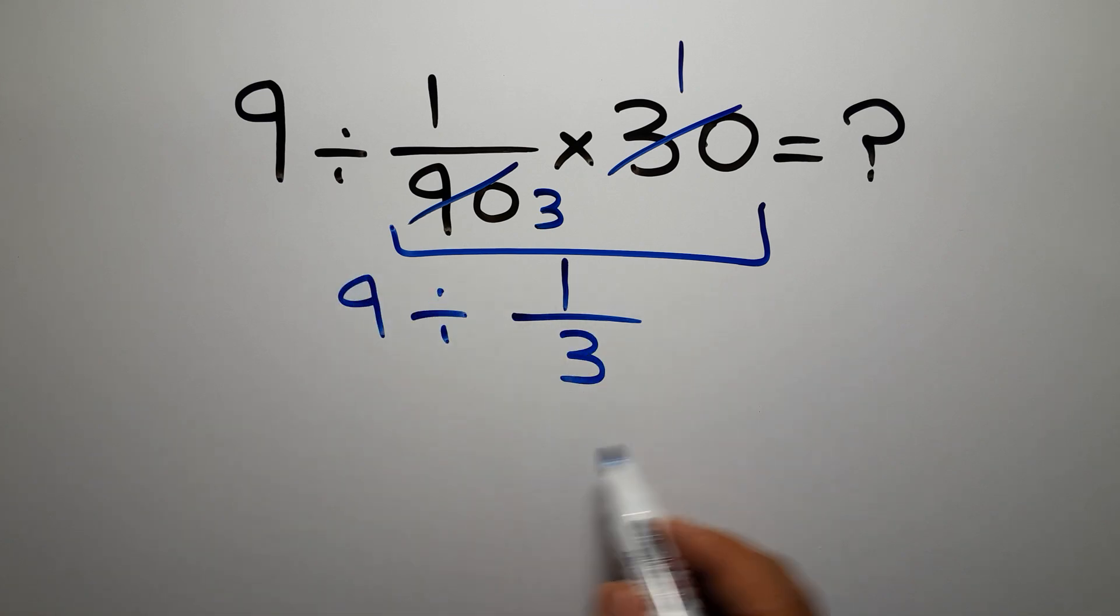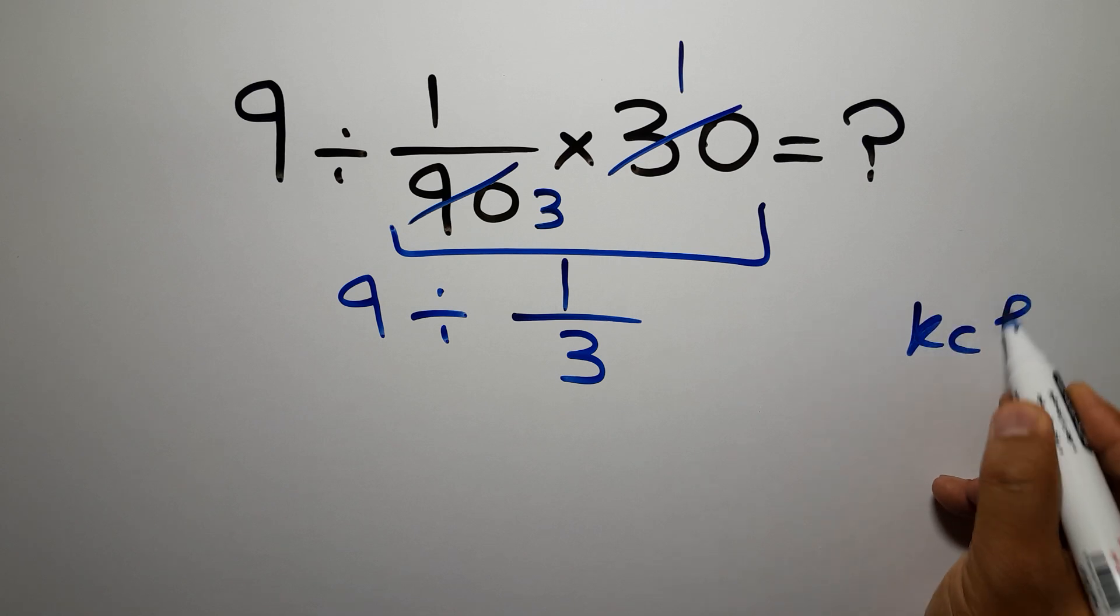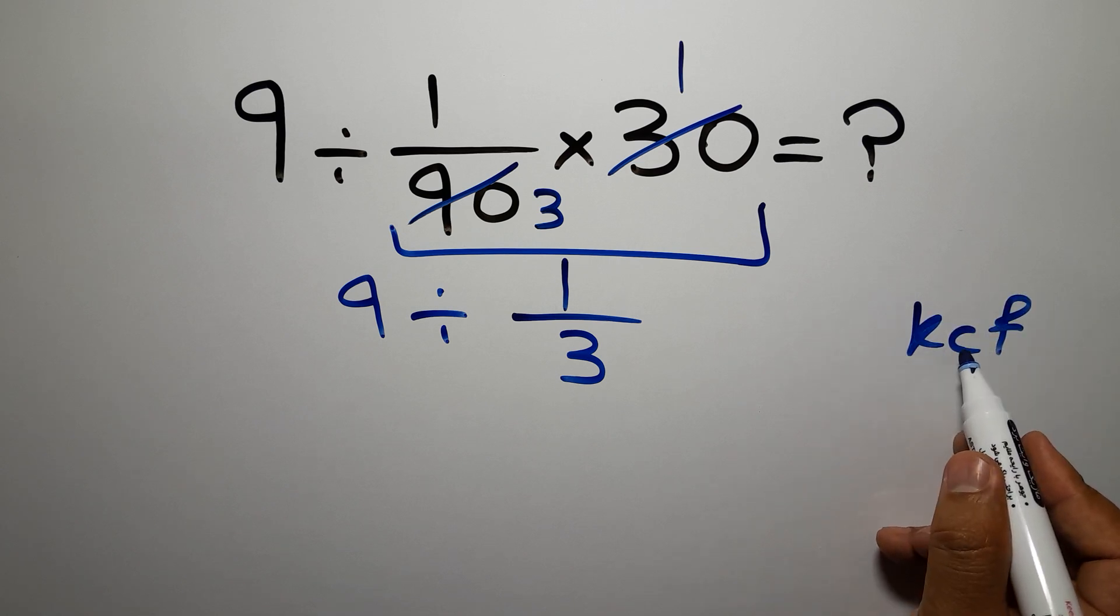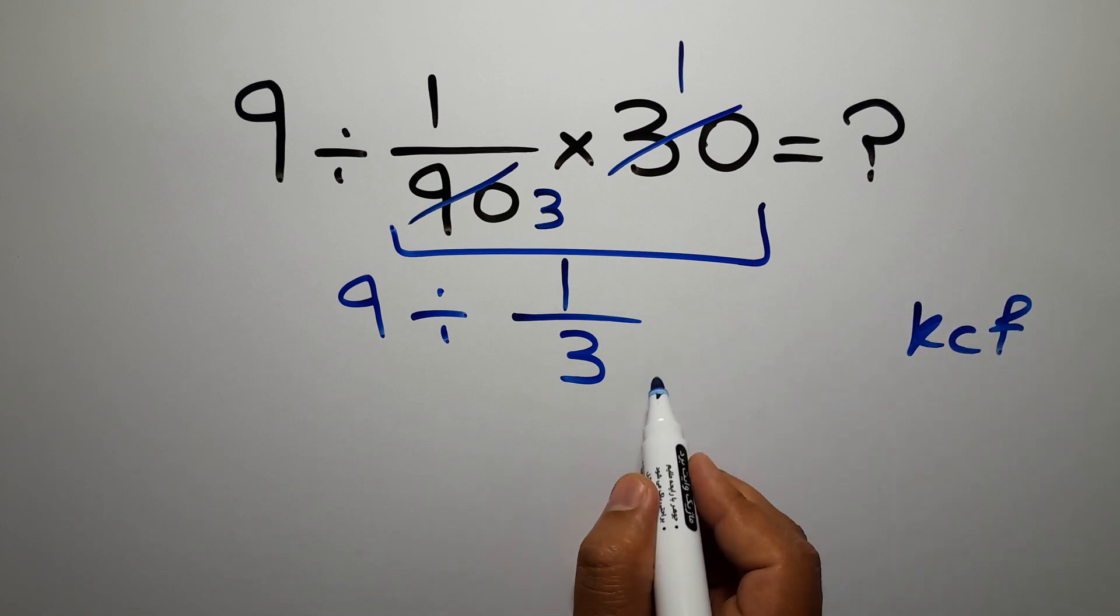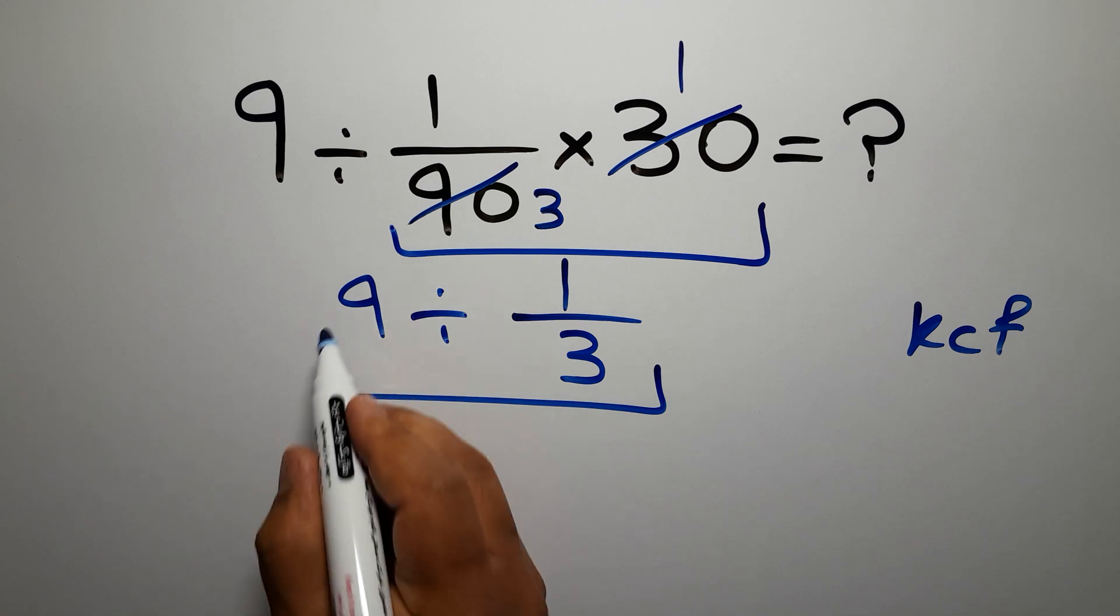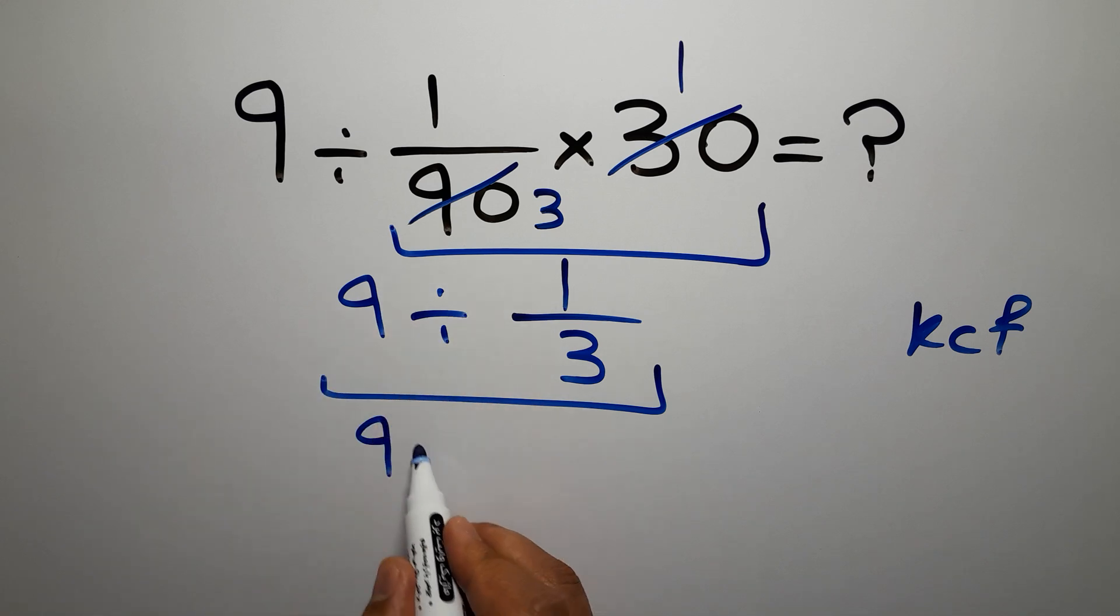This fraction, according to the KCF rule: K stands for keep, C stands for change, and F stands for flip. We can write: keep the first fraction, change division to multiplication, and flip the second fraction. 9 times 3 which...